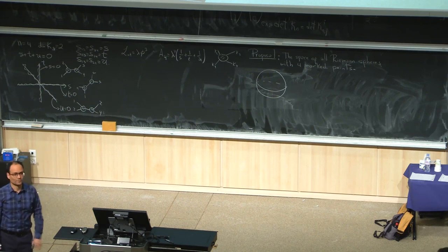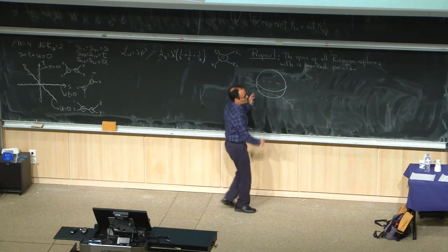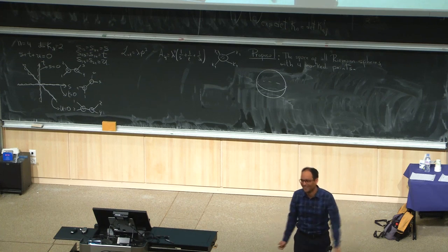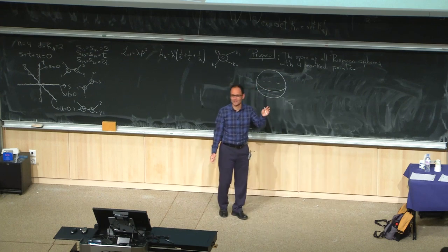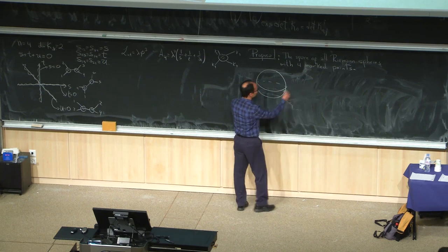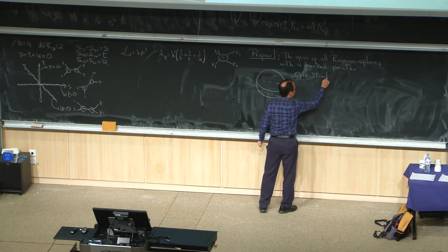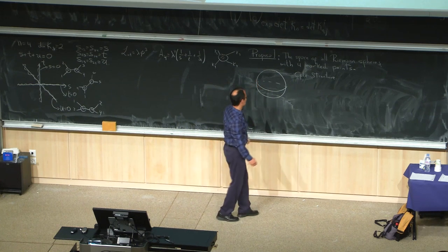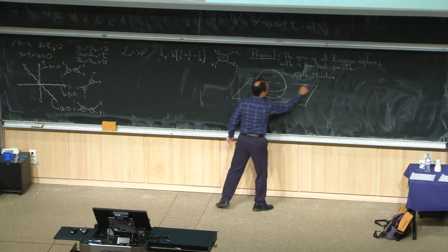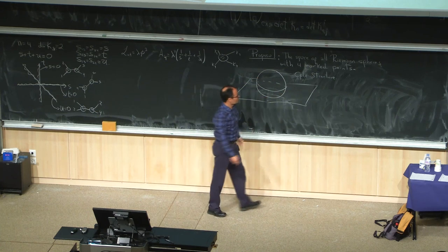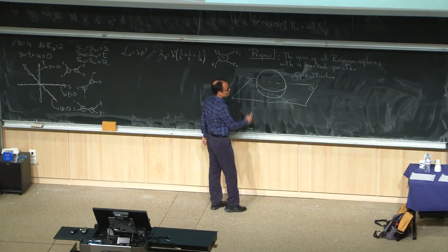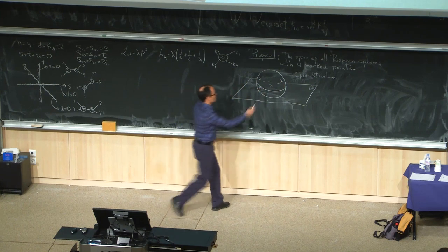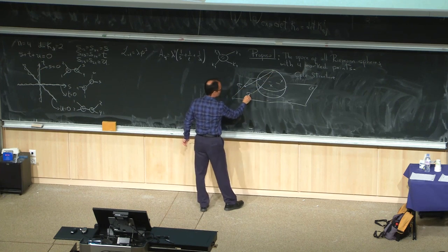Since SL(2,ℂ) is a three-dimensional group, we can fix three of the four marked points anywhere we want. I'll use SL(2,ℂ) to fix σ₁ = 0, σ₃ = 1, and σ₄ = ∞, leaving σ₂ free at some complex value z. For any particular value of z we get a complex sphere, and as we change z we get a different sphere — different spheres cannot be related by any remaining SL(2,ℂ) transformation since we've used all that freedom.